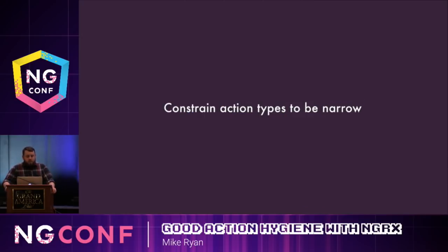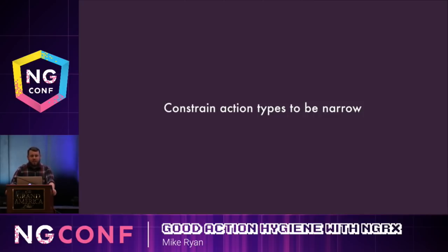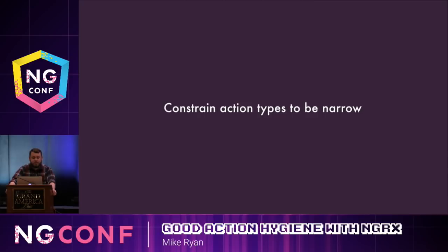What we want to do is constrain action types to be what I call narrow. Avoid putting yourself in a situation where you have to specify the kind, subtype, or class of an action — just leverage the action type to describe the event. This is going to cause you to write more actions, and I know NGRX has a boilerplate problem, but it's worth doing. You're going to save yourself more time down the road by avoiding these nested conditionals that appear in your application.